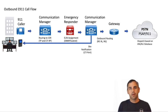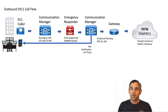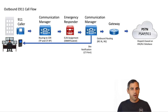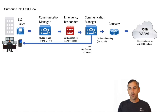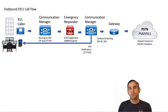After Emergency Responder does the ELIN assignment and on-site alerting, it routes the call back to Communications Manager, which has all the routing logic to get the call out to the PSTN and ultimately the PSAP. At a high level, the E911 solution's job is to: A, route the call out to the PSAP so emergency services can be dispatched to the right location; and B, provide on-site notification so security personnel or management can proactively assist the caller and escort emergency services to the right location when they arrive.